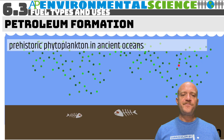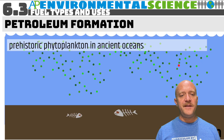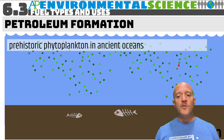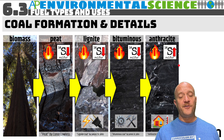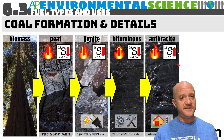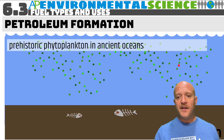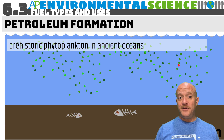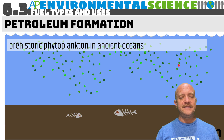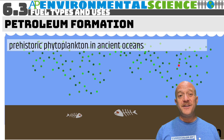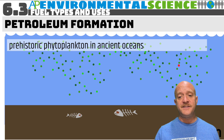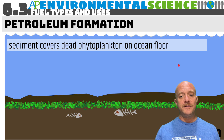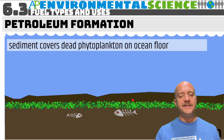Petroleum is formed from phytoplankton in the ocean. A way to remember it: coal is formed from plants, coal is a solid, and plants are solid; phytoplankton are found in the ocean, and petroleum or oil is liquid. Prehistoric phytoplankton floated around in ancient oceans, eventually died, sank to the bottom, and got covered by sediments.